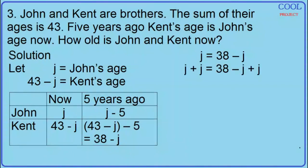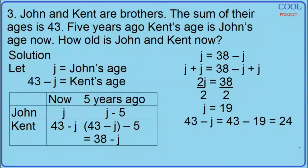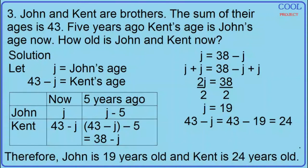Add J on both sides. Simplify: 2J is equal to 38. Divide both sides by 2. J is equal to 19. Substitute 19 for J to find Kent's age: 43 minus 19 is equal to 24. Therefore, John is 19 years old and Kent is 24 years old.